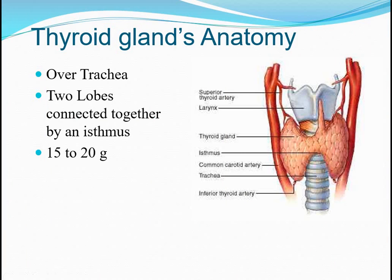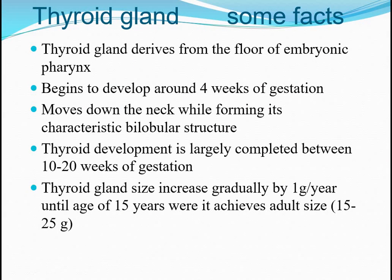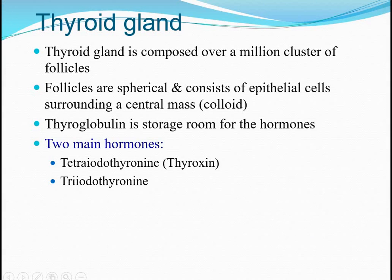Regarding thyroid gland anatomy, you know it is located over the trachea and has two lobes connected together by an isthmus, with an average weight of 15 to 20 grams. The thyroid gland derives from the floor of the embryonic pharynx. It begins to develop within four weeks of gestation and thyroid development is largely completed between 20 to 24 weeks. The thyroid gland is composed of over a million clusters of follicles, called thyroid follicles.